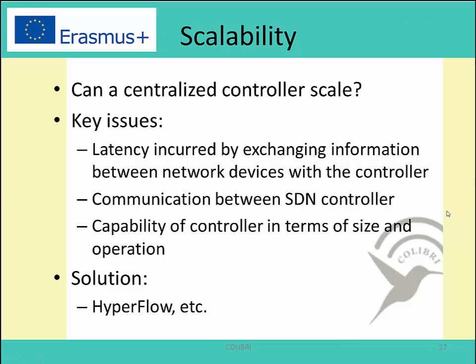The second challenge is the scalability problem. This issue can be split into controller scalability and network node scalability; however, in this lecture we will focus on controller scalability only. There are three specific challenges here. The first is the latency introduced by exchanging information between the controller and the network devices. The second is how physical controllers communicate with each other. The third is the capability of the controller in terms of size and operation. A solution for the first and third challenges is to implement a distributed controller infrastructure to reduce latency and the load on the controller.